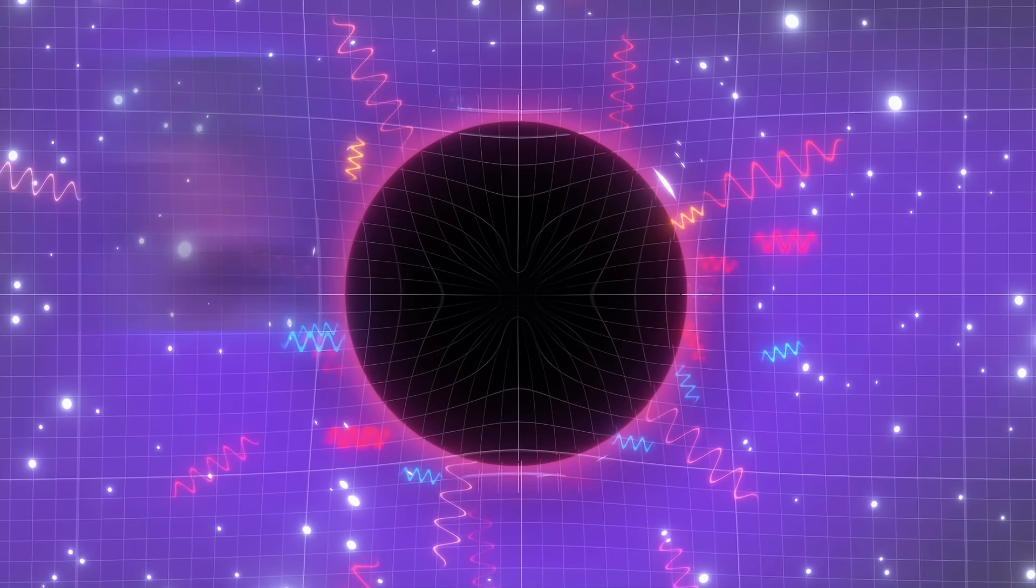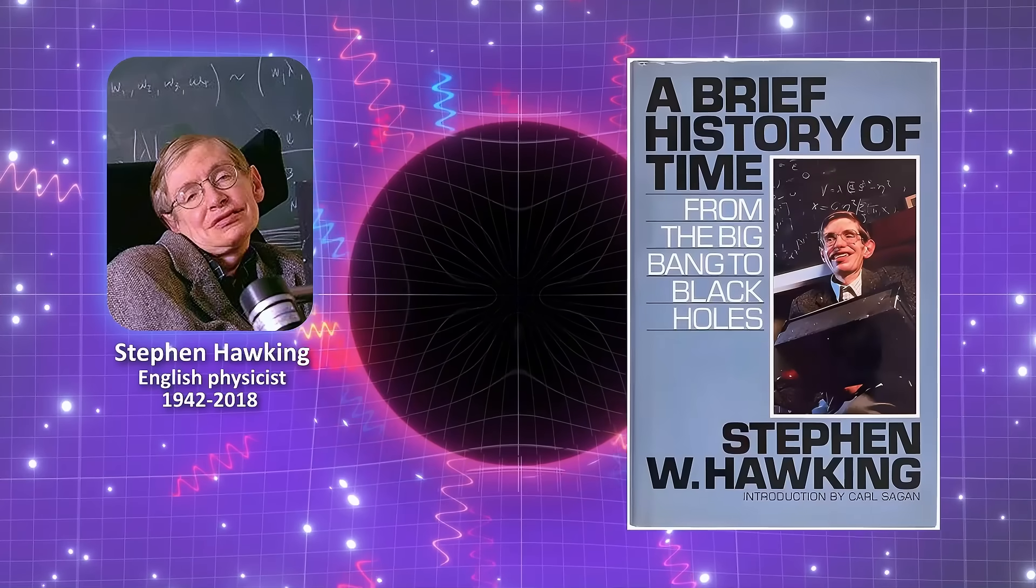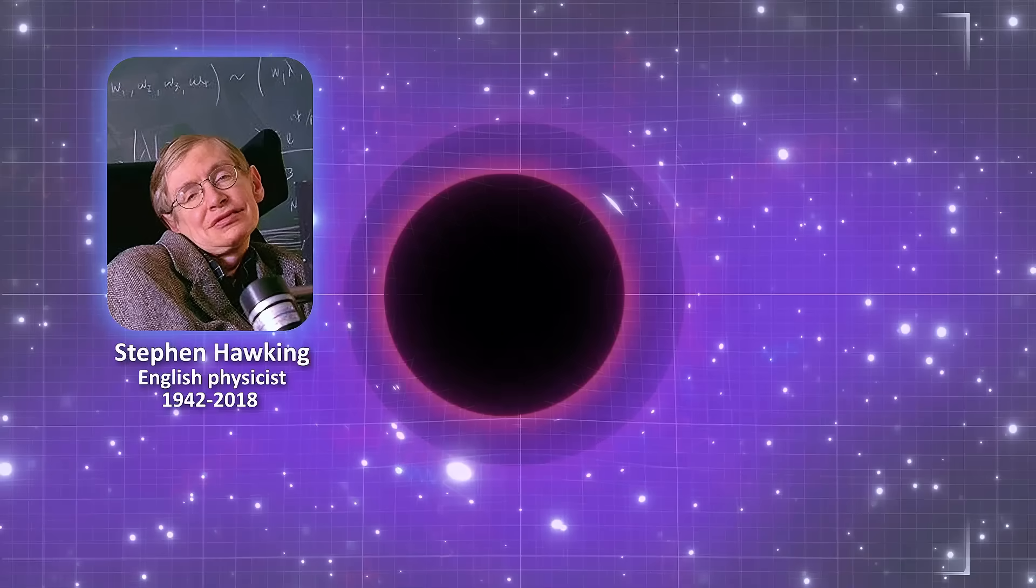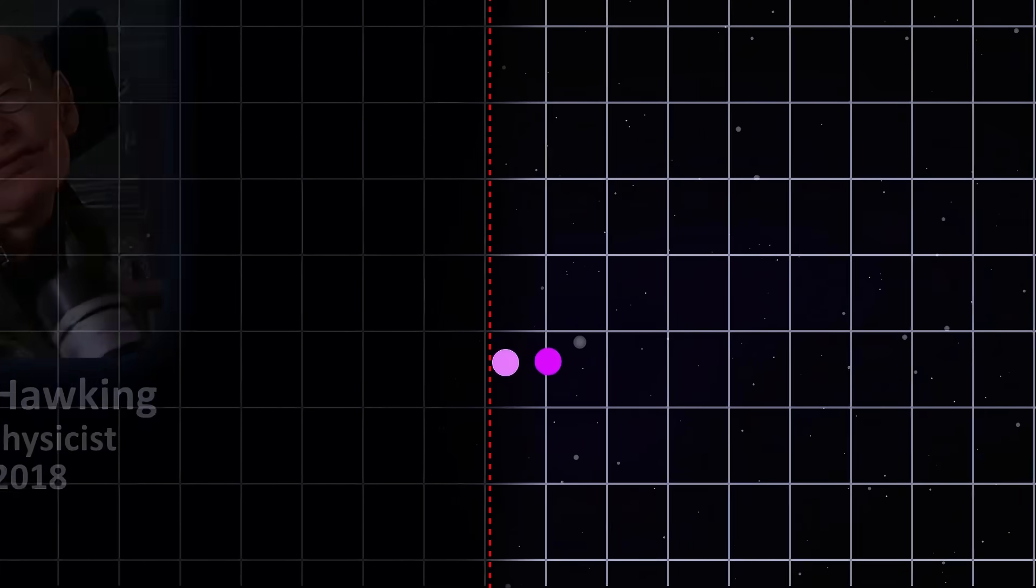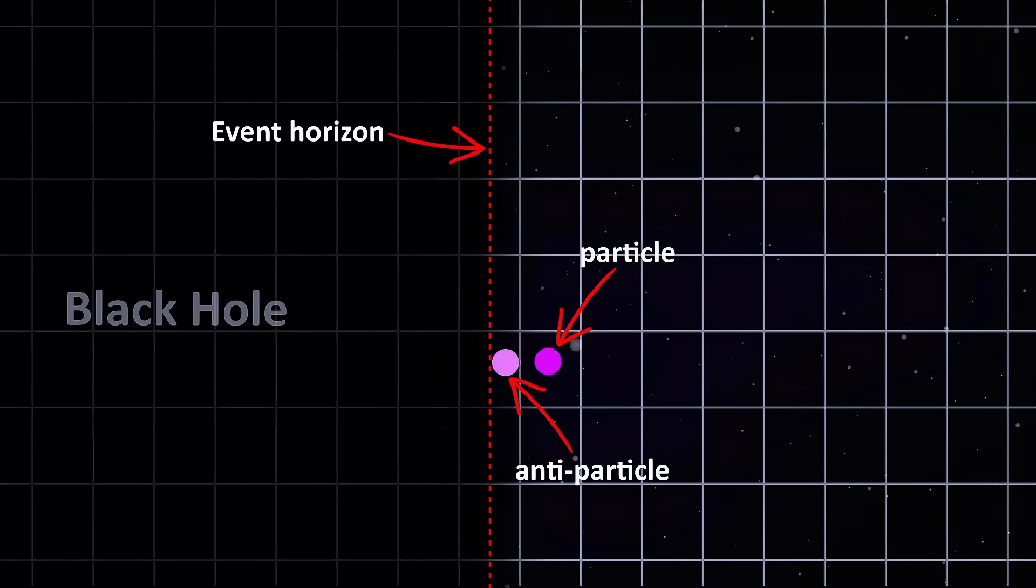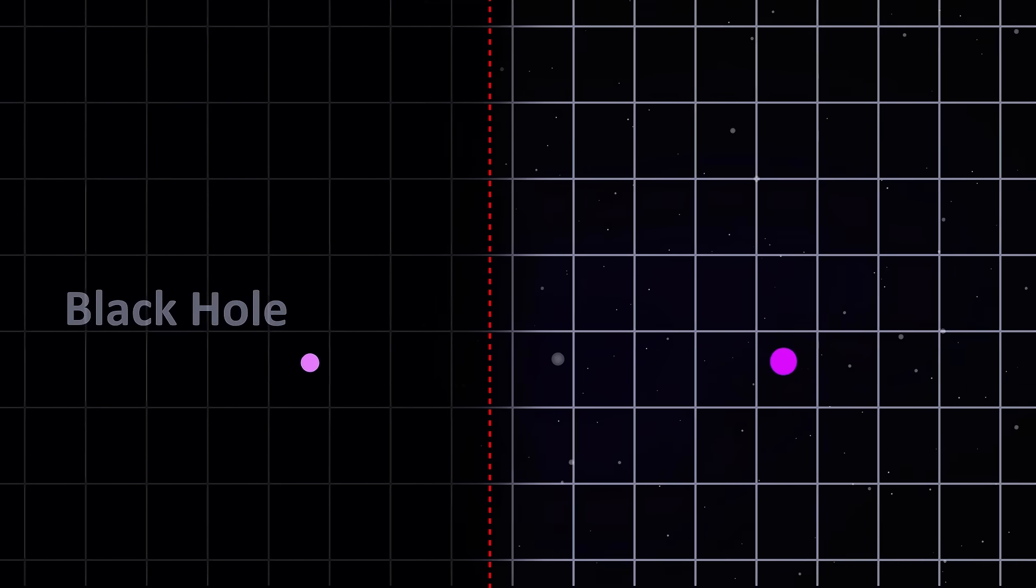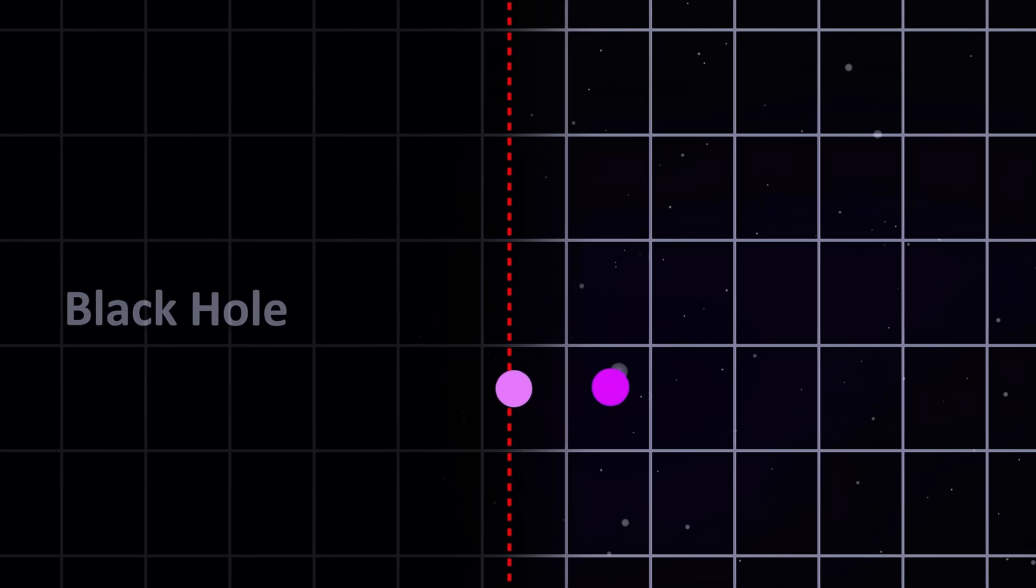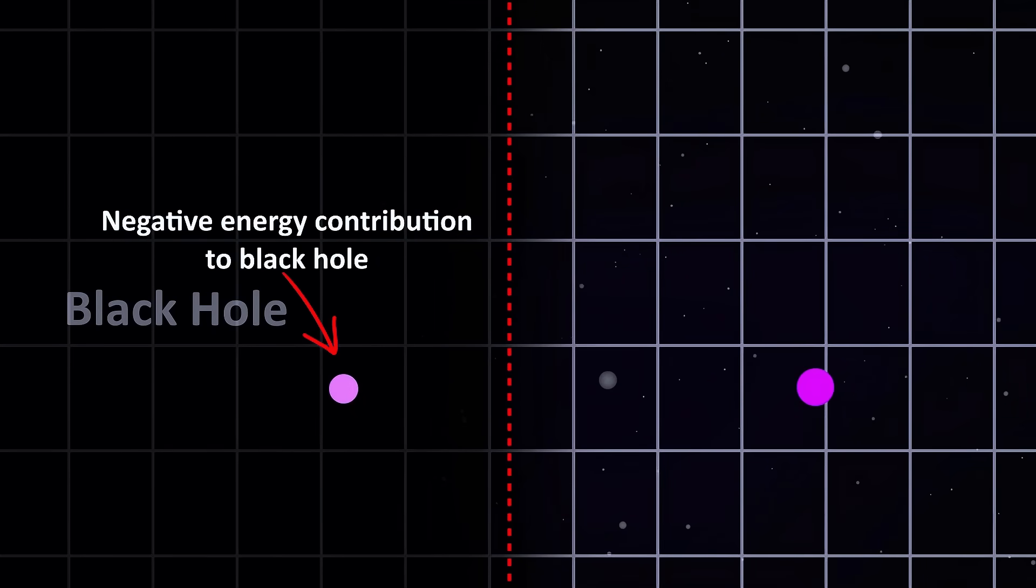And this is what Hawking used to explain Hawking radiation in his popular 1988 book, A Brief History of Time. He explained it like this. When a pair of virtual particles forms at the very edge of the event horizon of a black hole, before they can annihilate each other, one of them falls into the black hole while the other escapes. The one that falls into the black hole carries negative energy, decreasing the mass of the black hole a tiny amount. The one that escapes carries away positive energy. And that's the Hawking radiation that we observe.